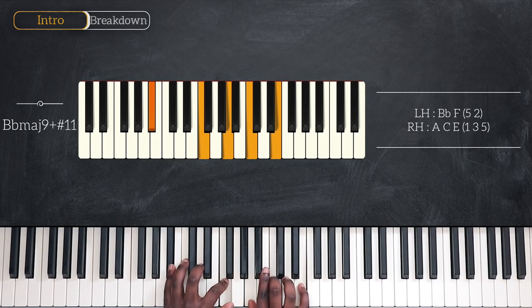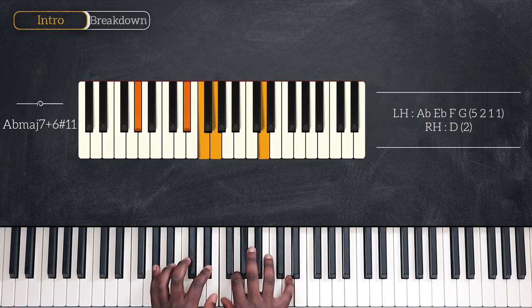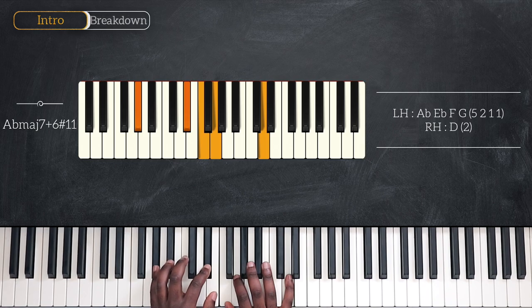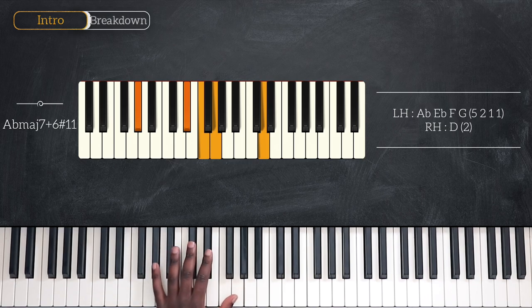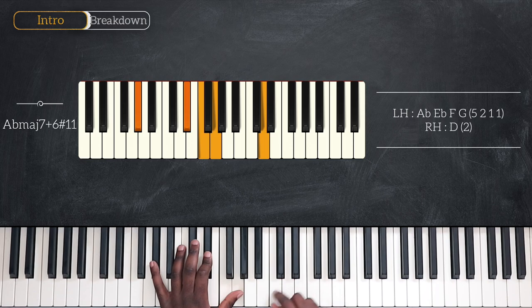Then Ab major 7 at 6, sharp 11 also. Ab and Eb, F, G playing with my thumb. The two notes at the same time.